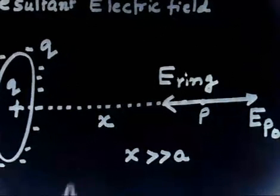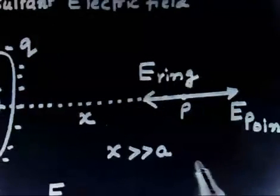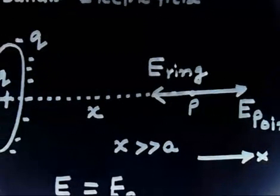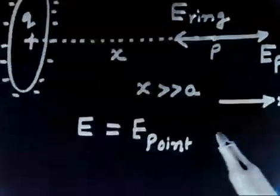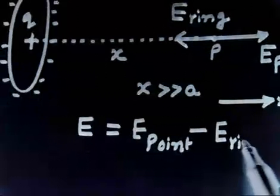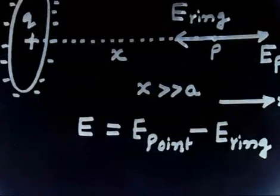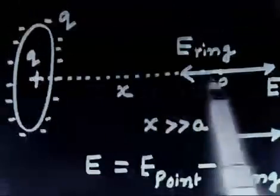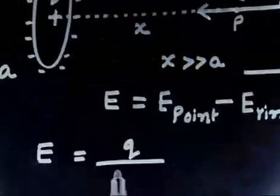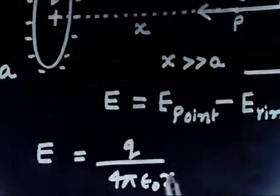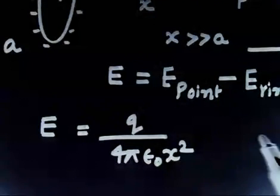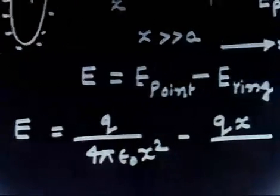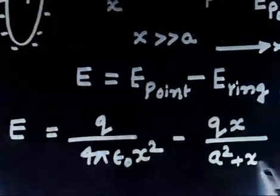Taking the positive X direction as outward, the resultant electric field will be E_point minus E_ring. The electric field due to the point charge is Q divided by 4π ε₀ X². The electric field due to the ring is QX divided by (A² + X²)^(3/2). This result for the ring's axial electric field is standard and must be remembered.